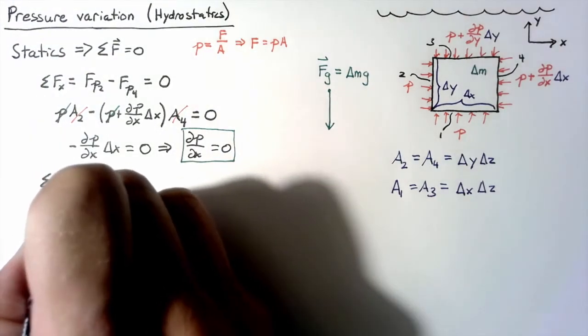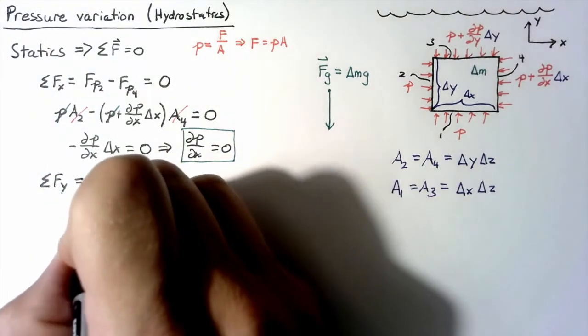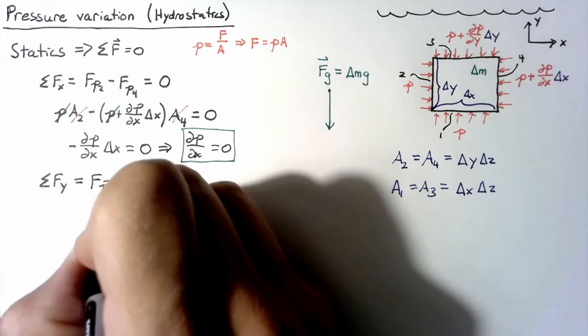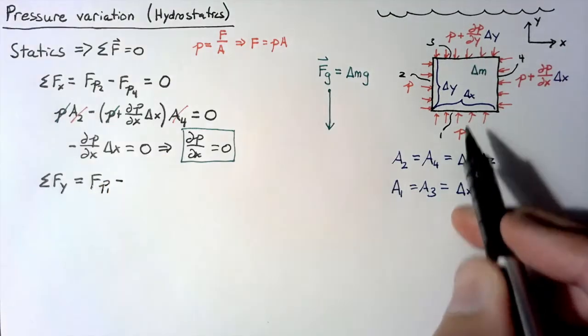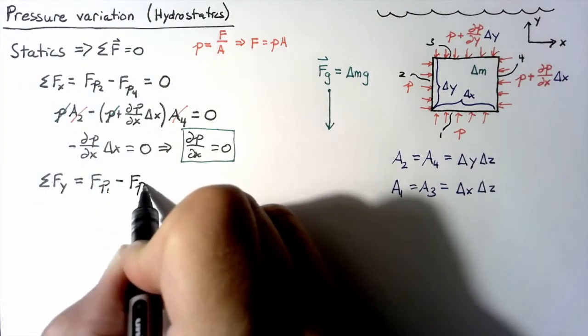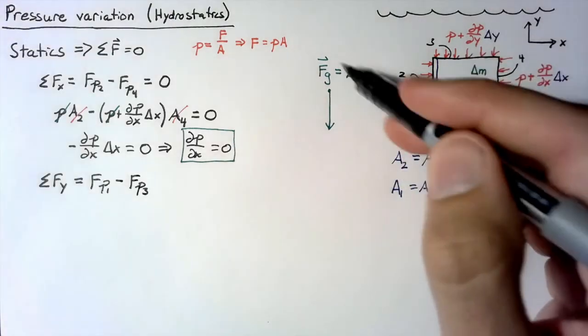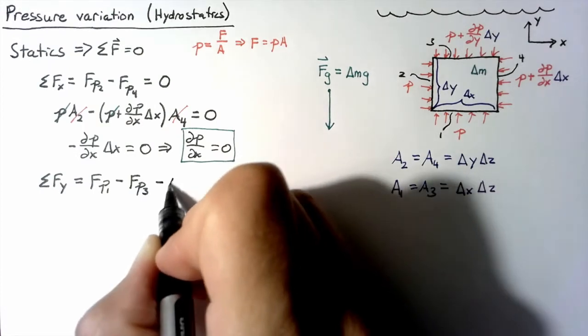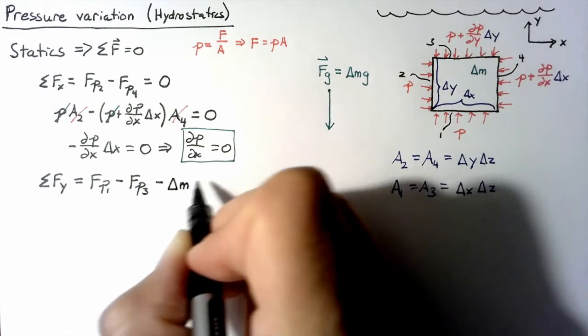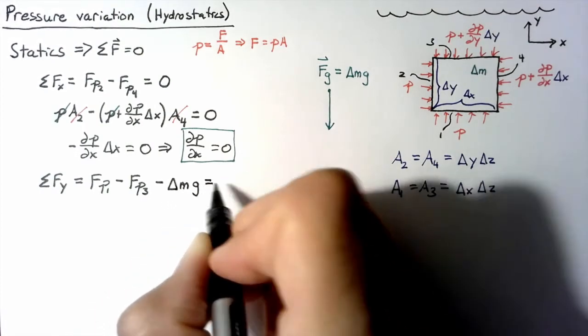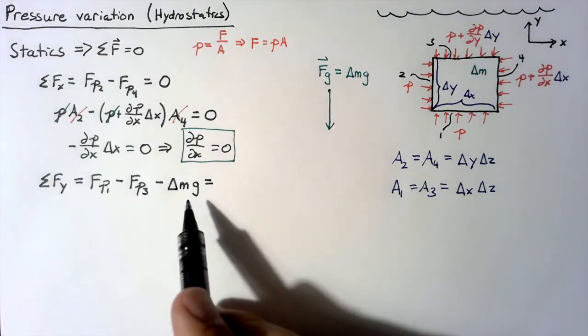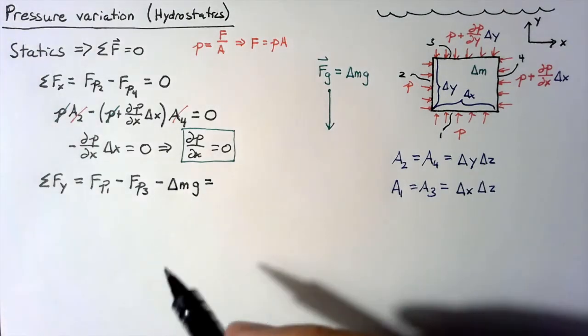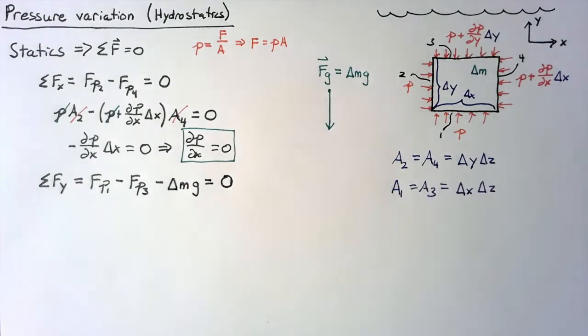So now let's look at the y direction. We still have the forces due to the pressure on the faces. Face 1 is pushing up and face 3 is going to be pushing down. But then we also have this additional fg. So this is going to be pointing downward, and the value of that we said was delta m multiplied by g. Now just because we have gravity doesn't mean that this is moving.